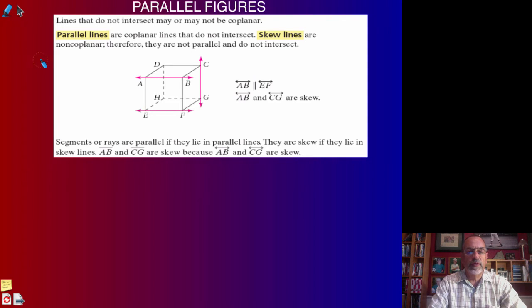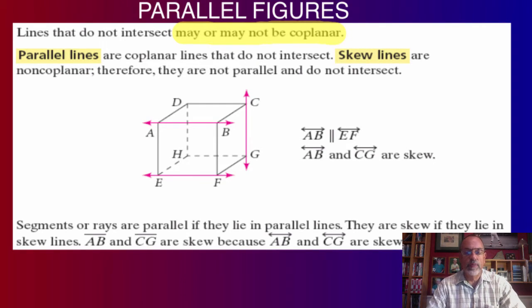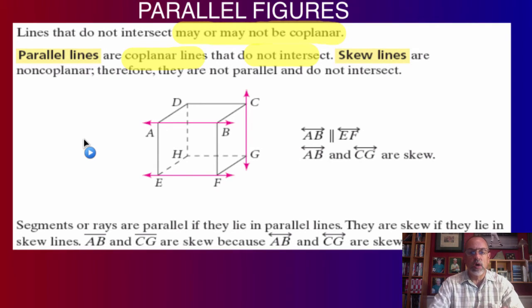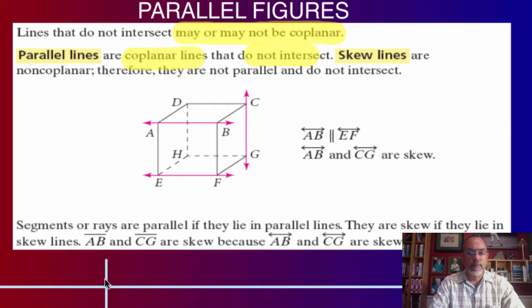As we read the paragraph here, it says lines may not intersect, but that doesn't mean they have to be in the same plane. They may or may not be coplanar, and remember coplanar simply means that they're in the same plane. So if two lines are in the same plane and they don't intersect, these are what we call parallel lines. Parallel lines require that the lines be in the same plane, on the same flat surface.